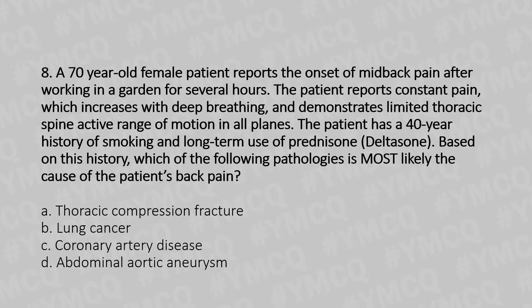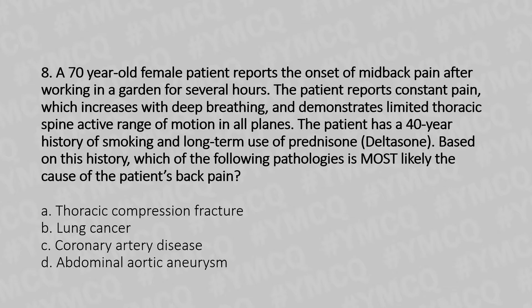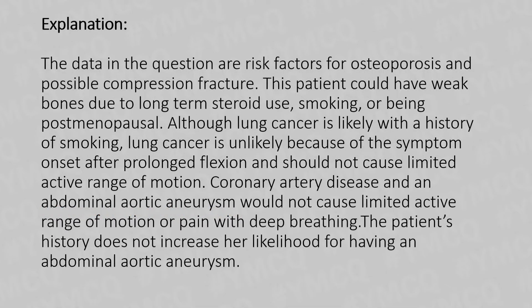Option A: thoracic compression fracture. Option B: lung cancer. Option C: coronary artery disease. Option D: abdominal aortic aneurysm. The answer is Option A: thoracic compression fracture. The data in the question are risk factors for osteoporosis and possible compression fracture.